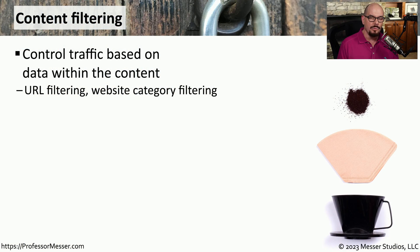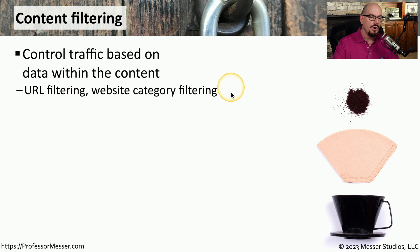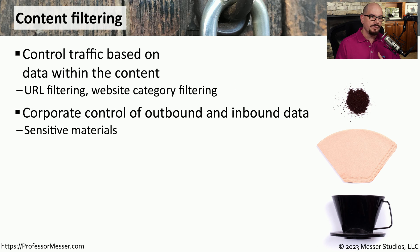Many organizations have a firewall that provides them a way to allow or disallow access from certain applications. But what if you wanted to filter on the data inside of those web pages? You can do that by using a content filter. Sometimes you may hear these referred to as a URL filter or website category filtering. Sometimes these web filters are designed to control what data is going out and what data is coming in, and this is especially important if your organization deals with a lot of sensitive types of data.